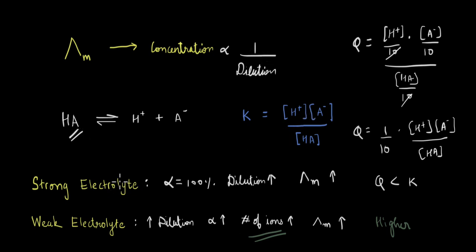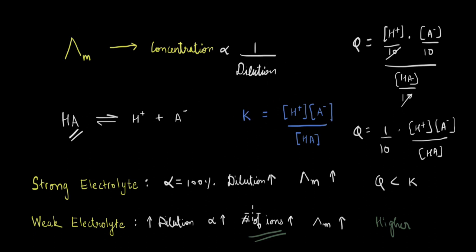This will not happen with a strong electrolyte because by definition it is already completely dissociated. But in the case of a weak electrolyte, which does not dissociate fully, on dilution the dissociation increases. When the dissociation increases, the number of ions also increases, and since it is the ions that conduct electricity in the solution, the molar conductivity increases much more than in the case of a strong electrolyte. So the increase in molar conductivity is much higher for a weak electrolyte.